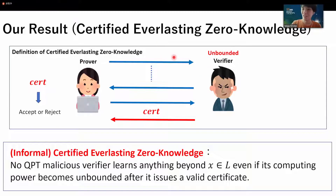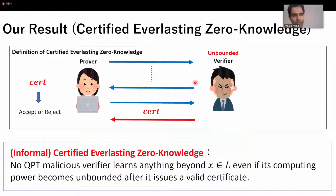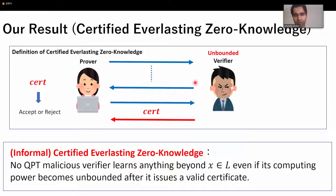Got it. And why does the verifier have to be unbounded? If the verifier can be unbounded, why is the prover needed at all? I thought usually you need a prover if the verifier is bounded and so on.